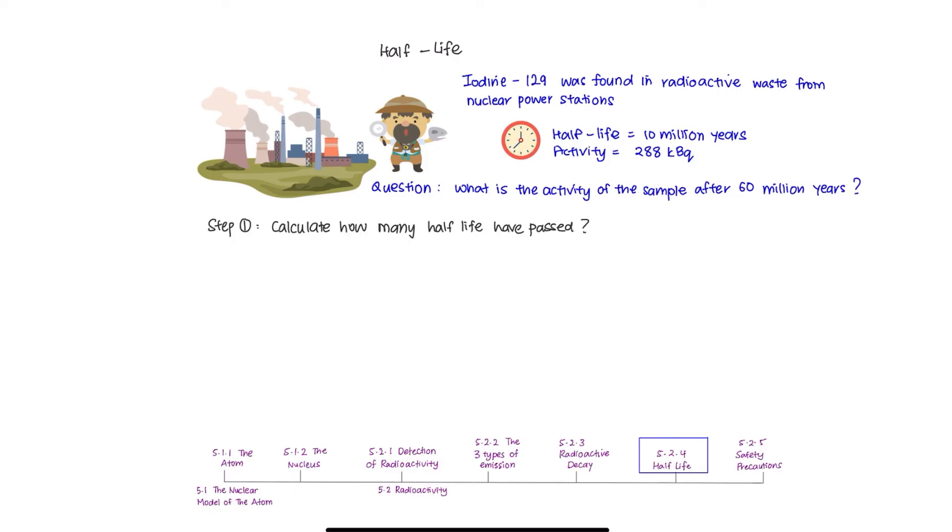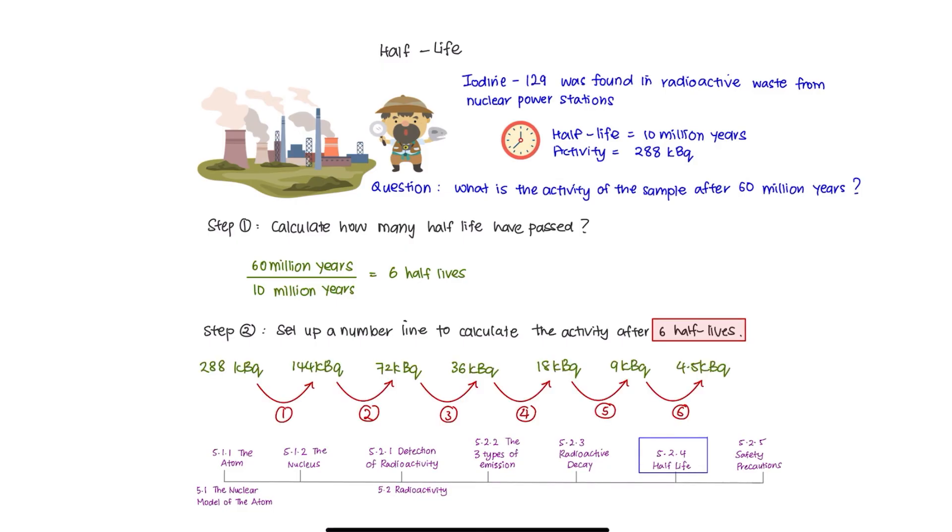Step 1. Calculate how many half-lives have passed. If one half-life equals to 10 million years, therefore 60 million years tells us that 6 half-lives have passed. Step 2. Set up a number line to calculate the activity after 6 half-lives. After each half-lives, your sample activity is reduced into half and you will be left with only 4.5 kilo becquerel of remaining nuclei.